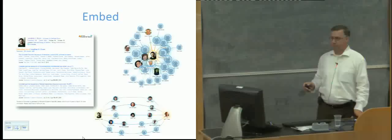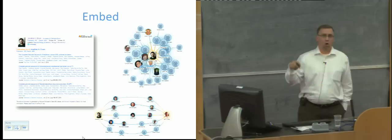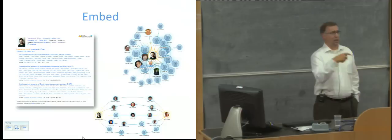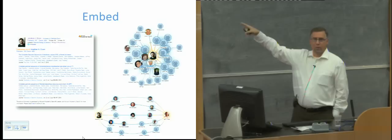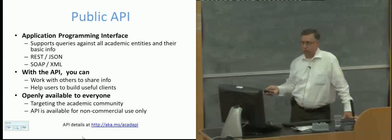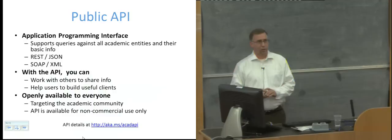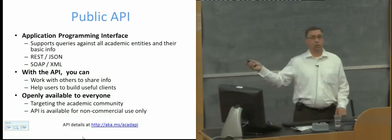There are a number of different ways to consume information from our system. Everything I showed — search results, entity pages, rank lists — all have RSS feeds. So if you want to track when a new citation shows up for a publication, you can do that via RSS. We have widgets in HTML or Silverlight that you can embed on your own site. We also have a public API. All information in our system is open; you need to request an API key simply because we have a non-commercial restriction on use. You can pull JSON records or use a SOAP interface to get XML back.